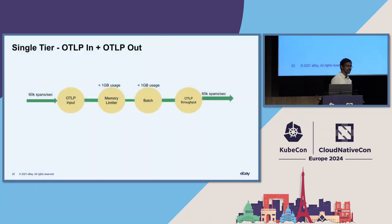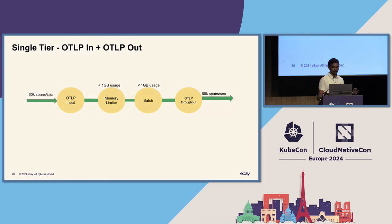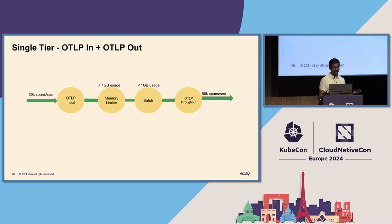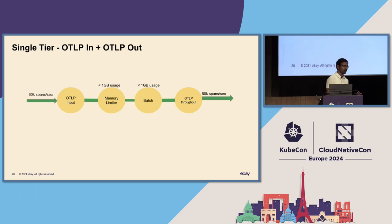The first thing we did was OTLP in, OTLP out, memory limiter and batch — which we require anyway — to identify how much throughput we could get. The memory limiter and batch processors are very low-overhead. They require some memory but not too much, and they more or less don't impact your throughput.